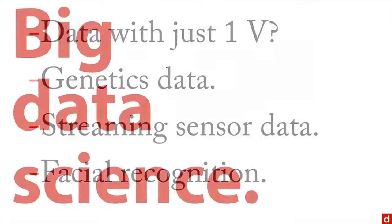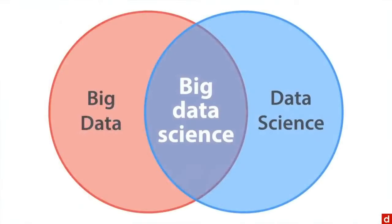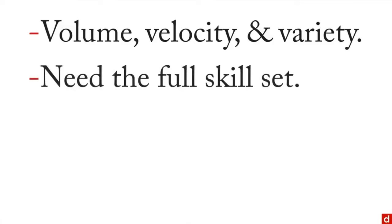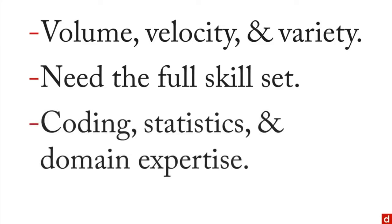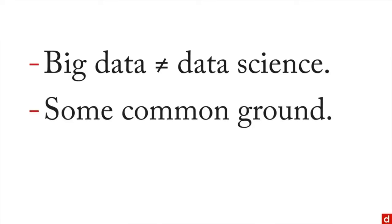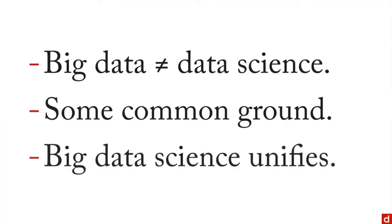If you want to combine the two, we can talk about big data science — the middle of the diagram. This is a situation where you have volume, velocity, and variety in your data. If you have all three, you're going to need the full data science skill set: coding, statistics, math, and domain expertise, primarily because of the variety you're dealing with. In sum: big data is not identical to data science, though there's common ground and many people who are good at one are good at the other. But they are conceptually distinct. There is, however, a shared middle ground of big data science that unifies the two separate fields.